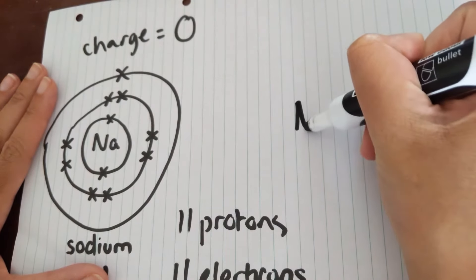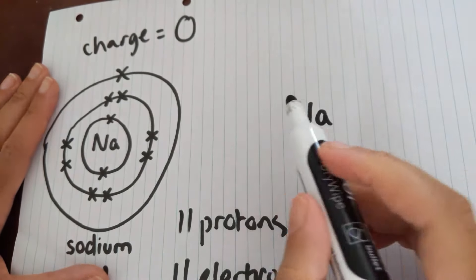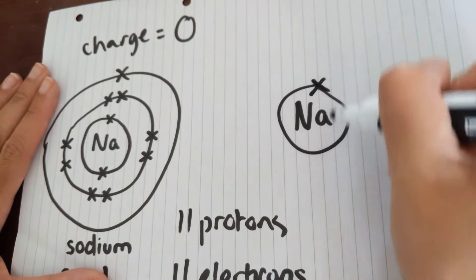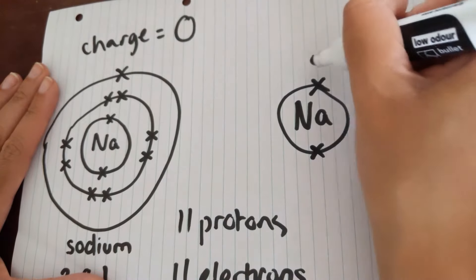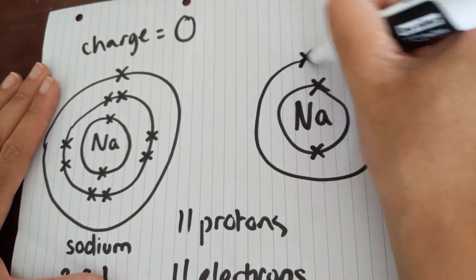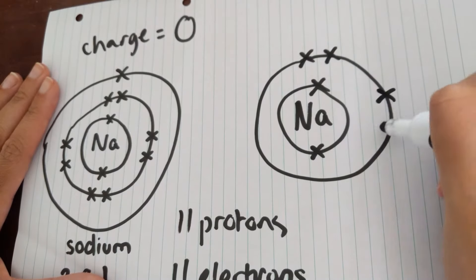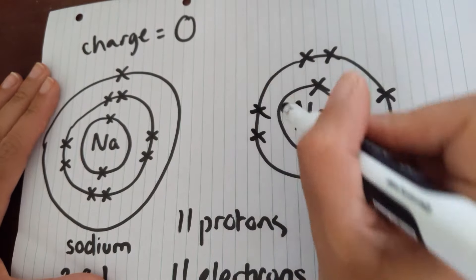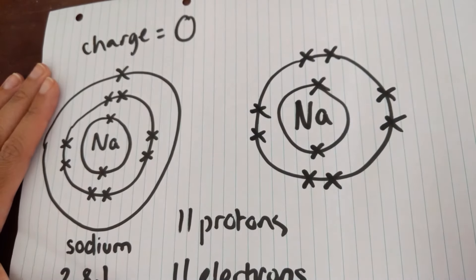So our ion of sodium, we're going to lose that electron. We're going to have our inner shell, which still has two electrons. And we're going to have our second shell, which still has eight electrons, but we're not going to draw an outermost shell because that outermost electron has gone somewhere else.